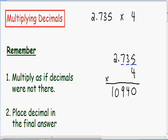And our 4 is a whole number which has zero numbers to the right of the decimal. So since we have three total numbers to the right of our decimal, our final answer also has to have three numbers to the right of our decimal.